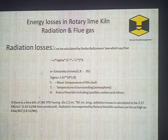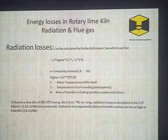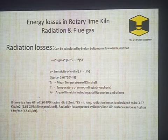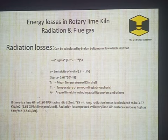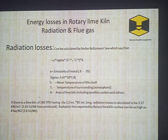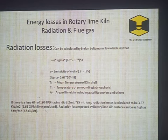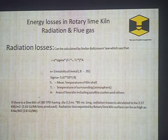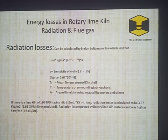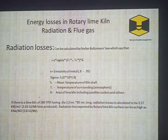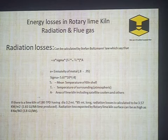Energy losses in a rotary lime kiln occur due to radiation and flue gases. Radiation losses can be calculated by the Stefan-Boltzmann law. We calculated that a kiln having a diameter of 3.2 meters and 85 meters long, with a capacity of 180 tons per day, has radiation losses of 3.57 kilowatts per meter squared, which equals 1.61 gigajoules per metric ton of lime produced. However, radiation losses can be as high as 8 kW/m², equaling 3.8 GJ per metric ton produced.